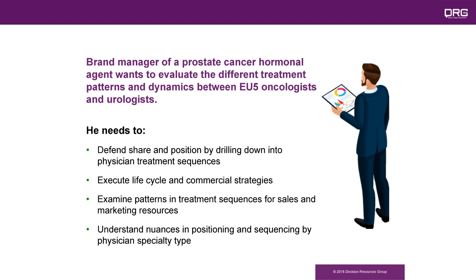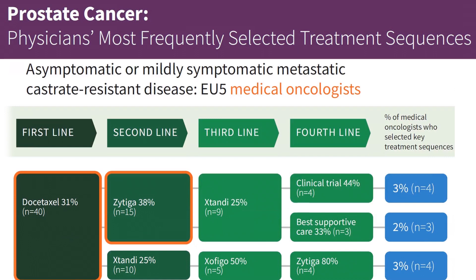We can also drill down into more commercially relevant treatment scenarios. In these examples, we ask physicians to tell us about their most frequent treatment sequences in metastatic castrate resistant prostate cancer patients who are either asymptomatic or mildly symptomatic, or who have symptomatic disease. We have data among both medical oncologists and urologists.